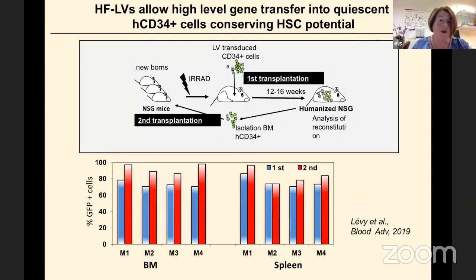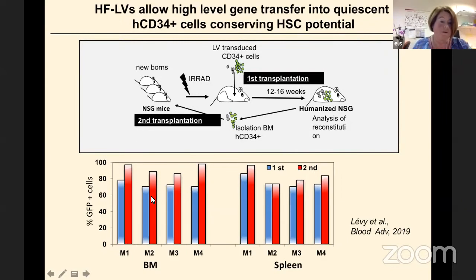To really prove that stem cells were transduced, we performed a secondary transplantation, taking bone marrow cells from the first humanized mice, isolating CD34 cells from the bone marrow and repeating the process. In this case, we even saw an augmentation of the transduced cells in the bone marrow, which indicates that we very likely transduced very high levels of stem cells.